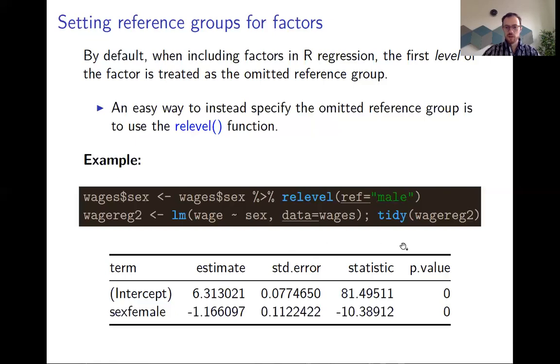Here you can see we change the reference group for sex in the wages data set to male. Then in the regression, sex will be female, which means that the intercept is the value for a male observation, and then female is just the difference, because this is a logical factor variable with just two levels.